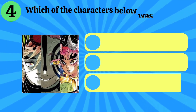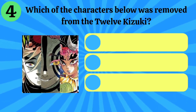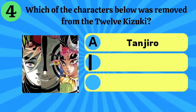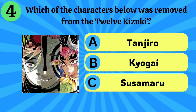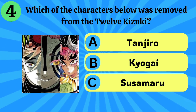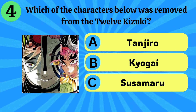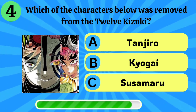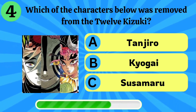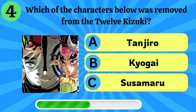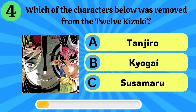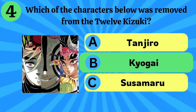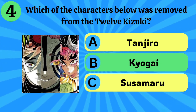Number 4. Which of the characters below was removed from the 12 Kizuki? Tanjiro, Kyugai, or Susamaru? The right answer is Kyugai.